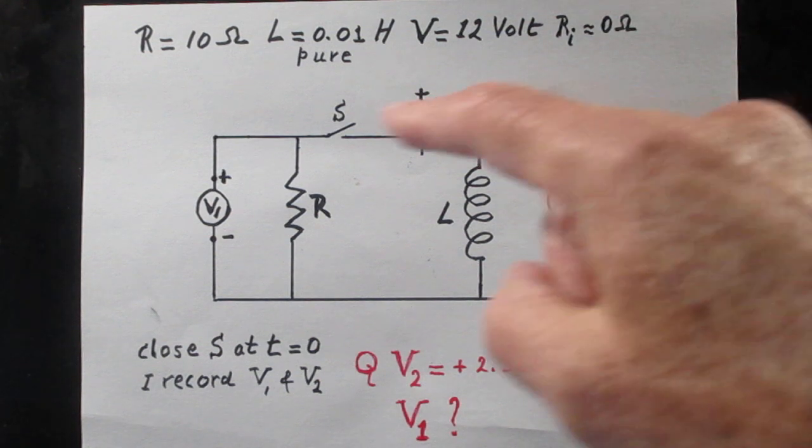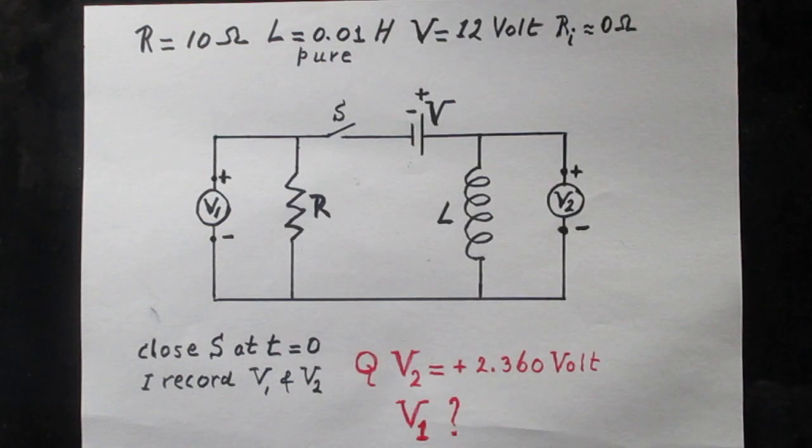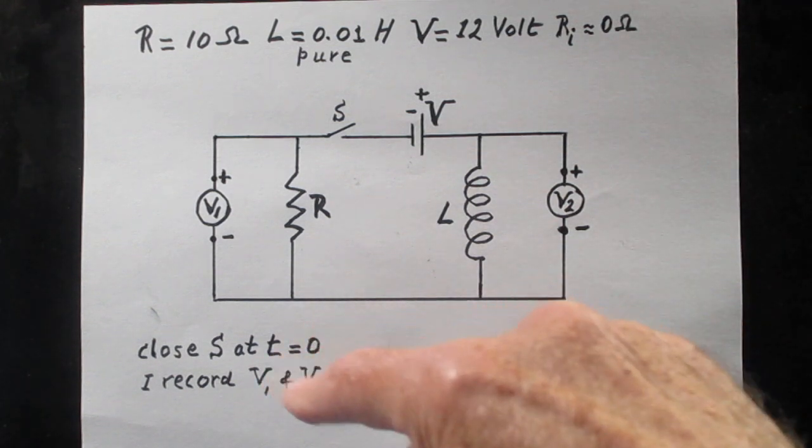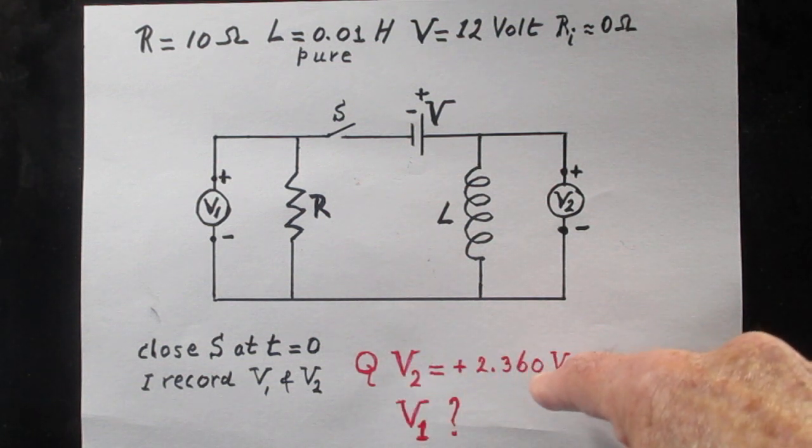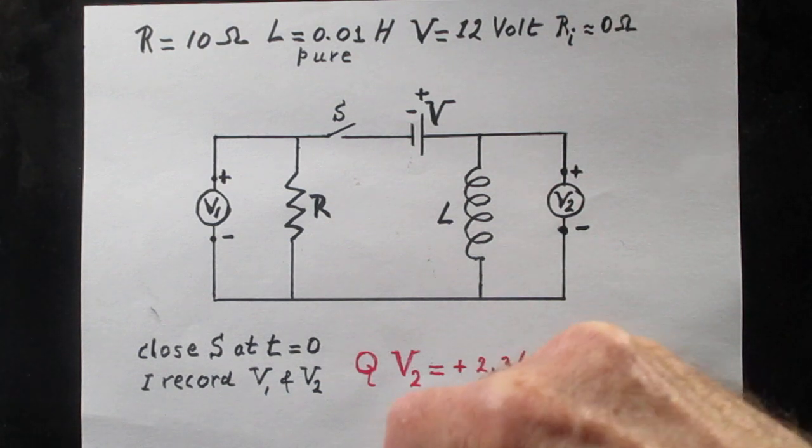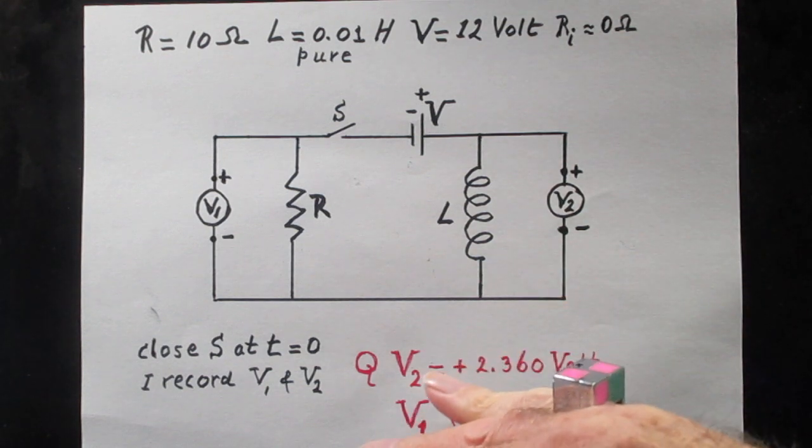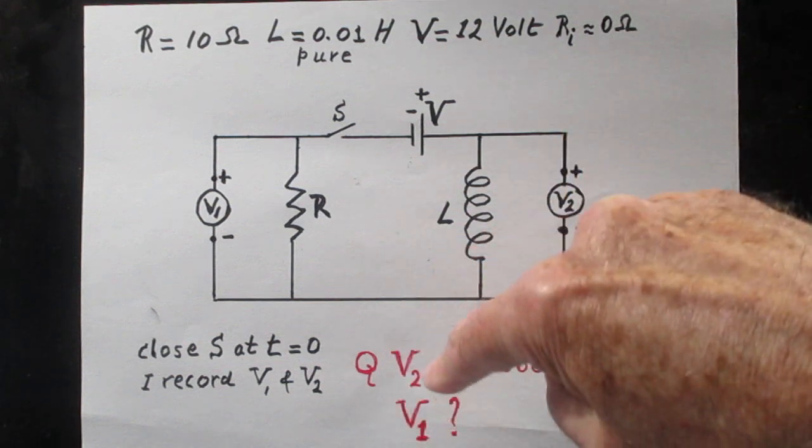I record very carefully in time both V1 and V2. At a particular moment in time I recorded that V2 was 2.360 volts. And the question now is what at that moment in time was V1.